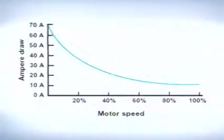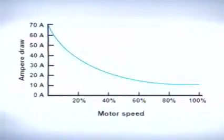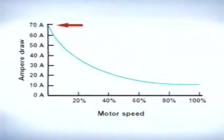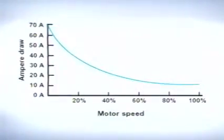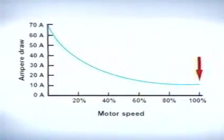When a motor is initially energized, it draws substantially more current than when the motor is running up to speed. For example, this motor draws close to 70 amperes when it's first energized — this is the motor's locked rotor amperage. As the motor reaches its design speed, the current draw drops down to its full load amperage.